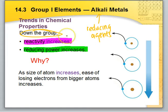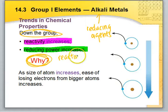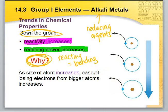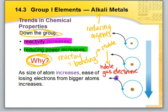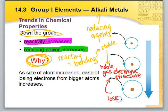The key question is why reactivity increases. Why do atoms want to bond? Reacting equals bonding. Why do alkali metals want to bond with other atoms? To become stable — they need a noble gas electronic structure. And how do Group 1 alkali metals achieve this? They lose their one valence electron.